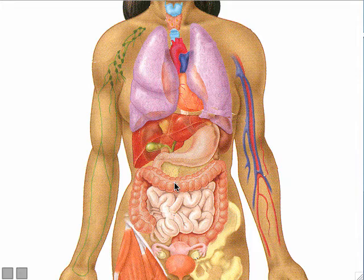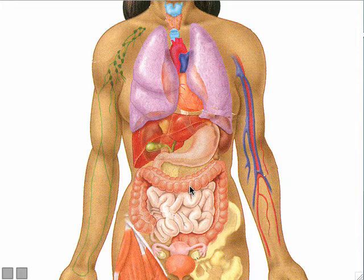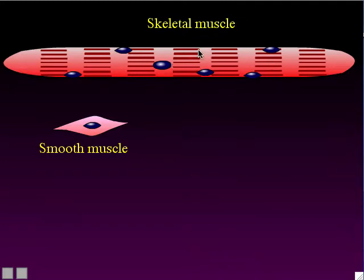Smooth muscles are not voluntary — you do not consciously control when they contract or relax. You don't have to consciously tell your stomach or intestines to contract; your body handles that for you. They are involuntary muscles. The shapes of smooth muscle cells are different from skeletal muscle cells — they are shorter with pointed ends. They only have one nucleus per cell and they do not have striations. Under a microscope, smooth muscle tissue looks like a nice even shade of pink with none of the dark and light striations you see in skeletal muscle.